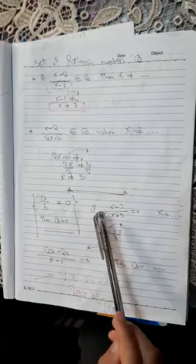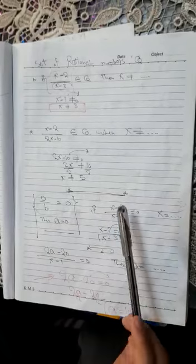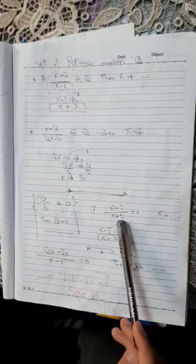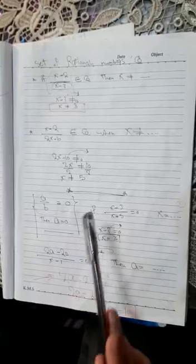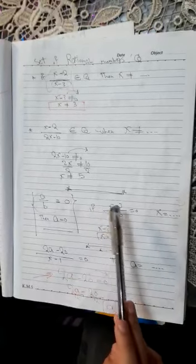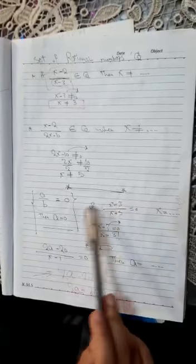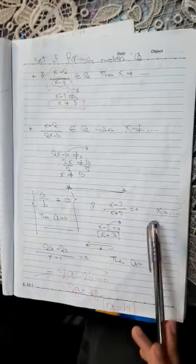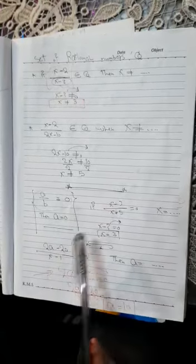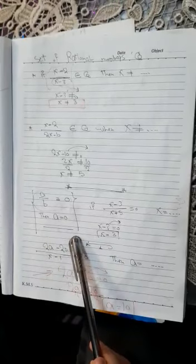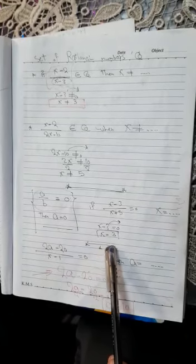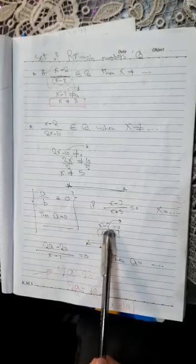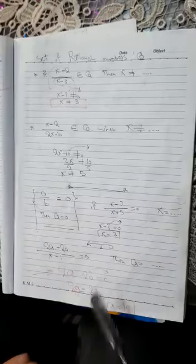If (x-3x)/(x+4) equals zero — here we have 'equal zero', so we will work on the numerator. The numerator is x minus 3x equals zero, which means x equals 3, because 3 minus 3 equals zero.